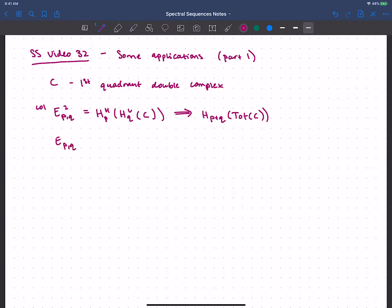And then we had another filtration where we used the rows, and that gave us again a spectral sequence with E_2 page. Only now we did vertical homology after doing horizontal.